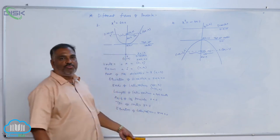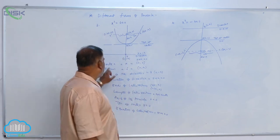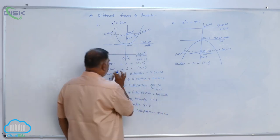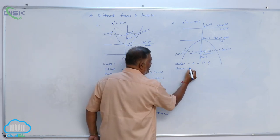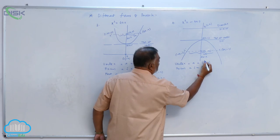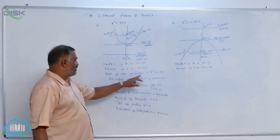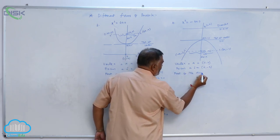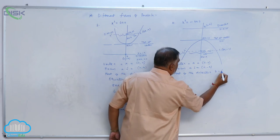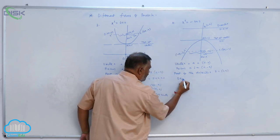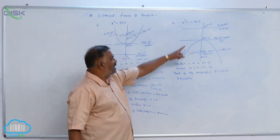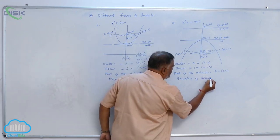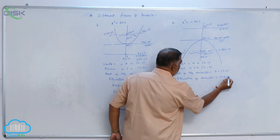We will list out the properties of the downward parabola. The vertex A = (0, 0). The focus S = (0, −a). The foot of the directrix Z = (0, a). The equation of directrix is y − a = 0.